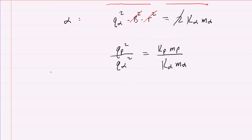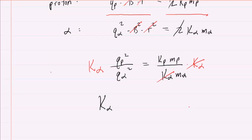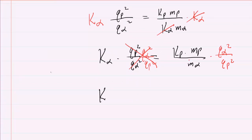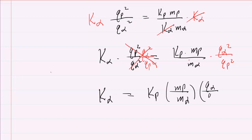We're going to do a little more manipulation. We'll multiply both sides by the kinetic energy of the alpha particle, since our goal is to isolate it. So now we have the kinetic energy of the alpha particle times the ratio of these charges squared, equal to the kinetic energy of the proton times the mass of the proton over the mass of the alpha particle. Finally, we multiply both sides by the reciprocal — q_alpha² over q_p² — which cancels those terms. We now have an expression for the kinetic energy of the alpha particle: K_alpha = K_proton × (m_proton / m_alpha) × (q_alpha / q_p)².